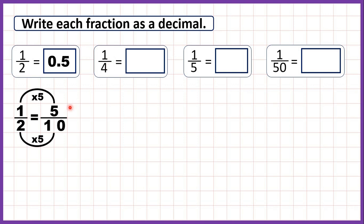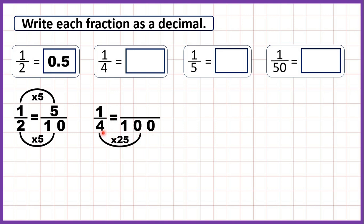Now we have one quarter. We can't change it to tenths because ten isn't a multiple of four. But one hundred is a multiple of four, and the second digit after the decimal point is the hundredths digit. So we find an equivalent fraction with a denominator of one hundred: four times twenty-five is one hundred, and one times twenty-five is twenty-five. So one quarter equals twenty-five hundredths, written as 0.25 — the two shifts to the tenths column and five stays in the hundredths column.